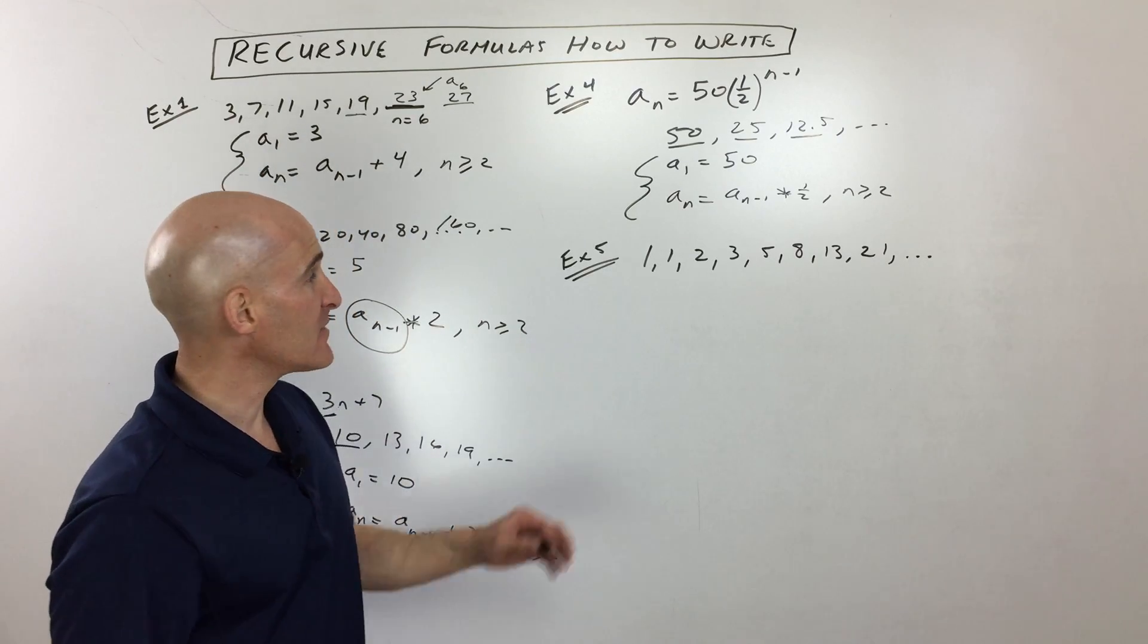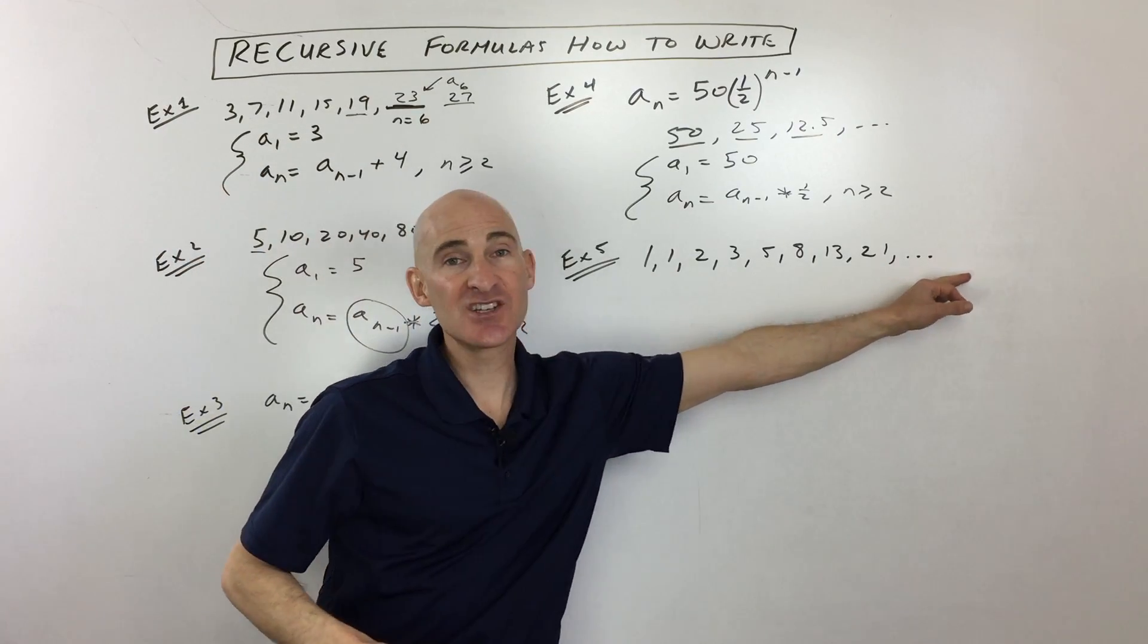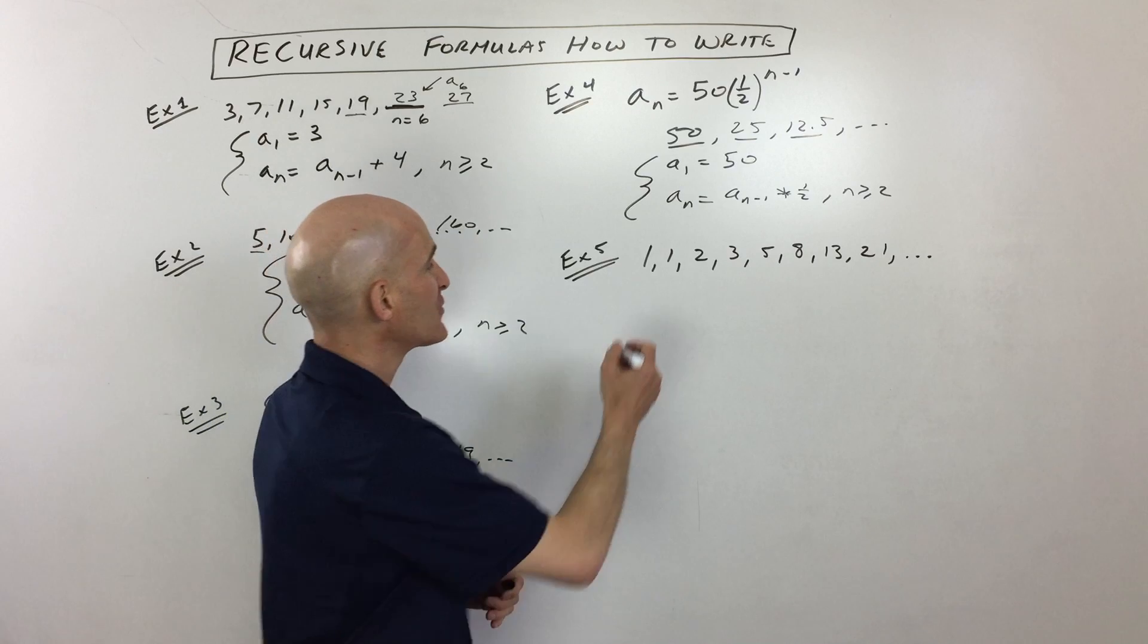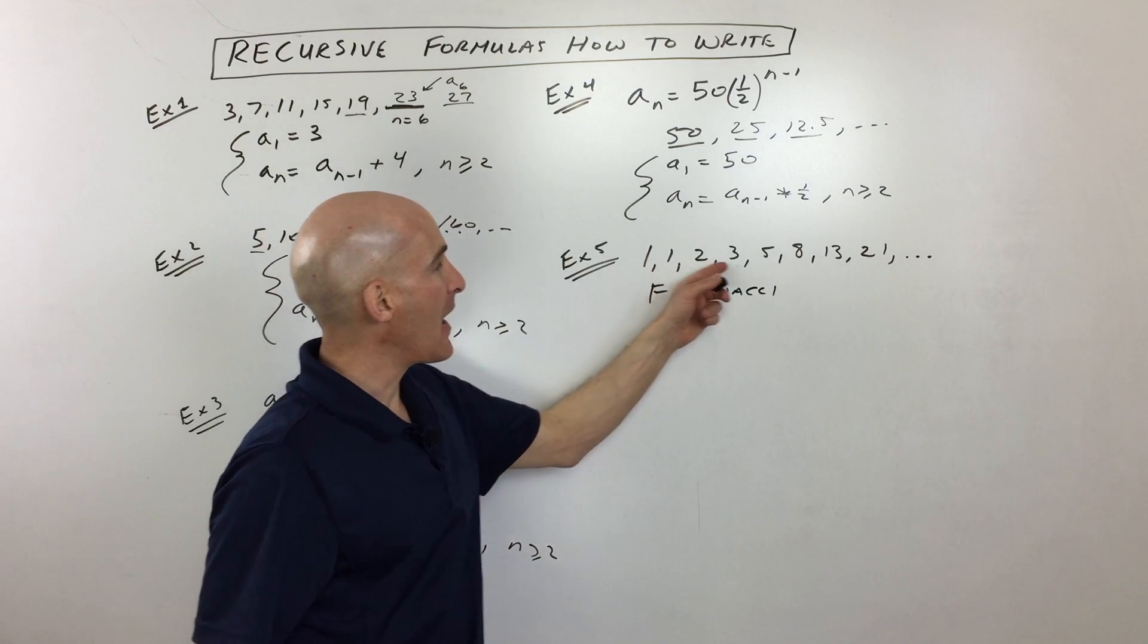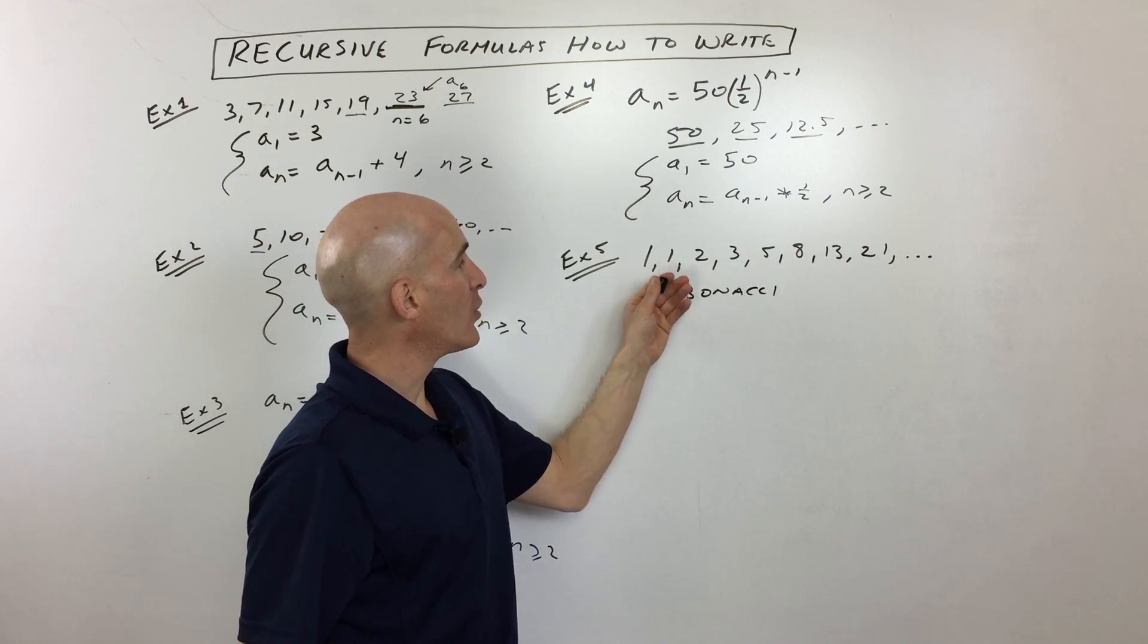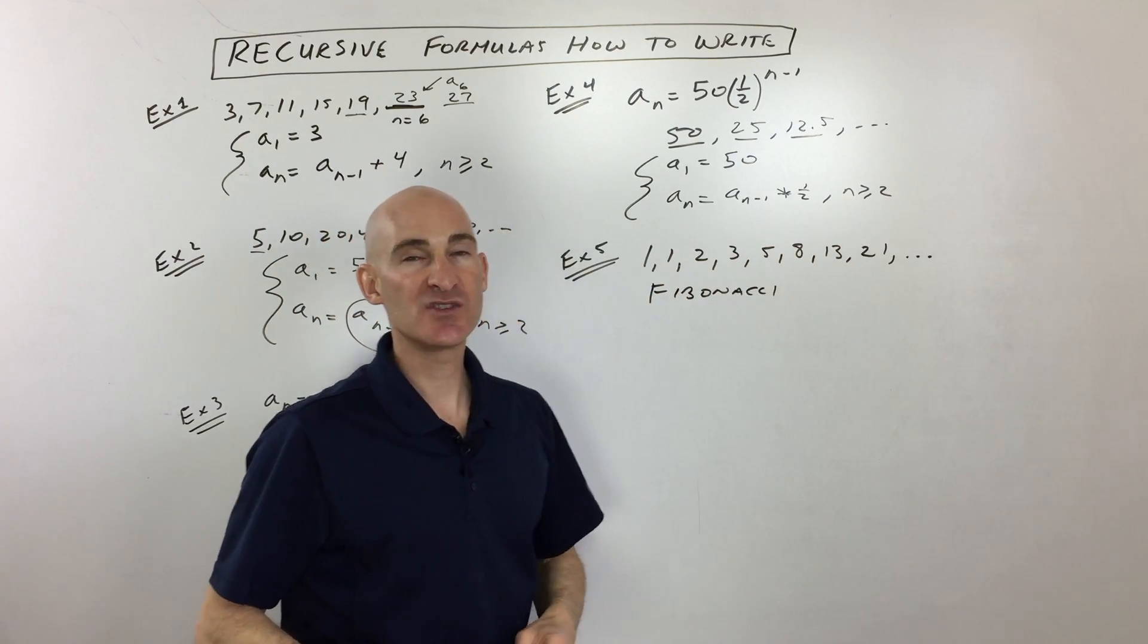Okay, so the last example, this is a famous sequence. It's the Fibonacci sequence. You probably heard about this before or maybe learned about it earlier in your math classes. But see if you can see the pattern. How are we getting from these terms to the next term? Can you see the pattern?